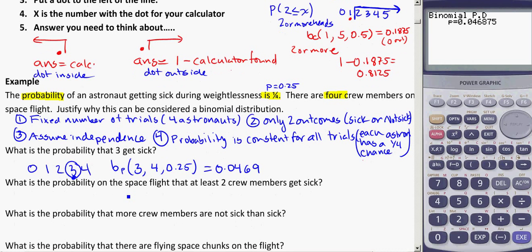Right, for the next example, what is the probability on a space flight, same space flight here, that at least two crew members get sick. So if I diagram that out, zero, one, two, three, four, at least two, well that includes two, and everybody above it. So we're saying, well at least is, well two could get sick, or three, or four. My dot always goes to the left of the line I've drawn in to bracket those.